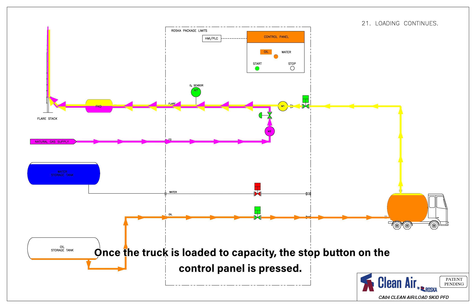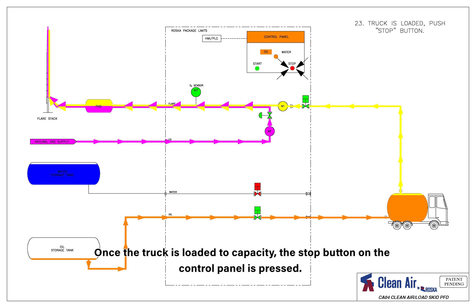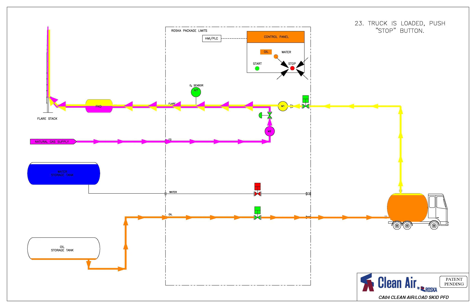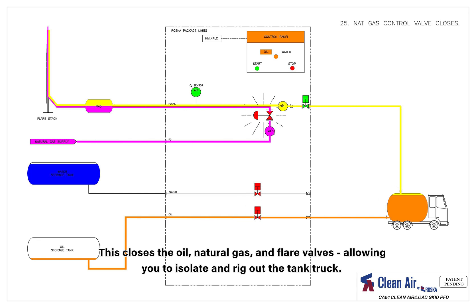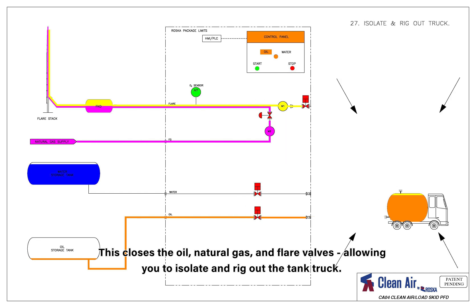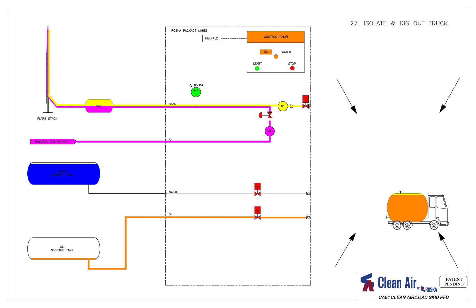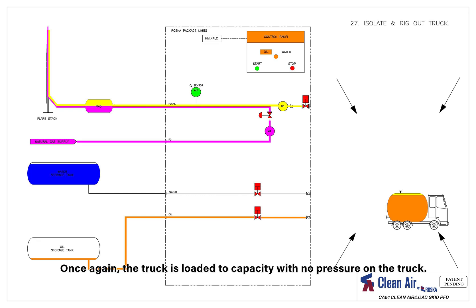Once the truck is loaded to capacity, the stop button on the control panel is pressed. This closes the oil, natural gas, and flare valves, allowing you to isolate and rig out the tank truck. Once again, the truck is loaded to capacity with no pressure on the truck.